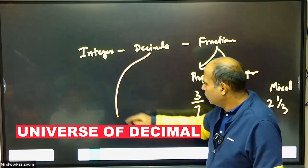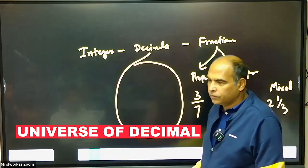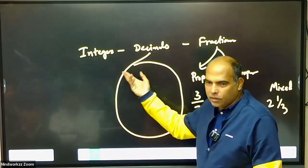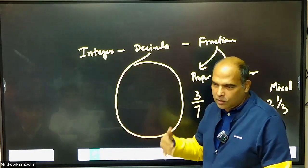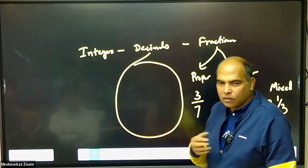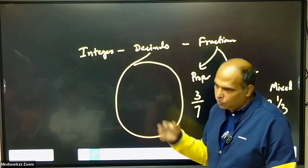Decimals have their own universe. An integer is what? Anything which does not have a decimal. 0 is an integer, minus 2 is also an integer, minus 10,000 is also an integer, and 200 is also an integer.